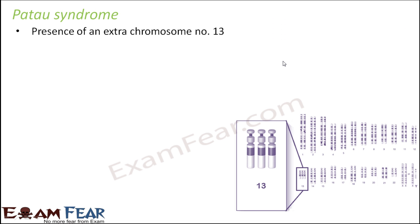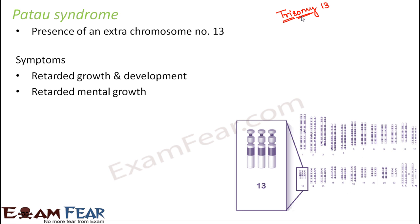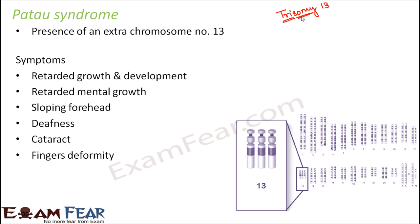Now let's look at Patau syndrome. Here there is a presence of an extra chromosome number 13. Since there are three chromosomes present on number 13, it is also called trisomy 13 — 'tri' means three. Similarly, Edwards syndrome is called trisomy 18 because there are also three chromosomes on number 18. The symptoms of Patau syndrome are again retarded growth and development, retarded mental growth, sloping forehead, deafness, cataract, and finger deformity.